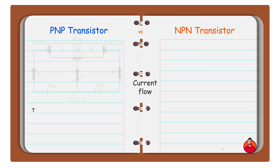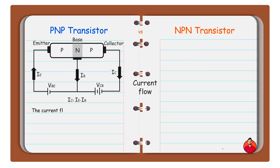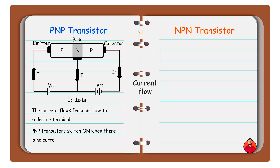In PNP transistor, the current flows from emitter to collector terminal. The PNP transistor switches on when there is no current flow at the base terminal.